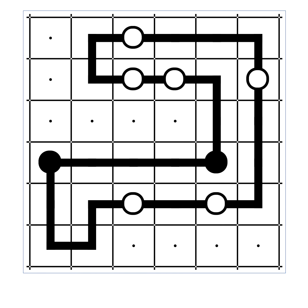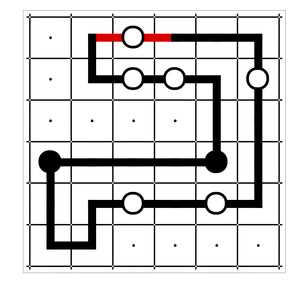The line of the loop should go through the white circles in a straight line, and it should turn upon the black circles.